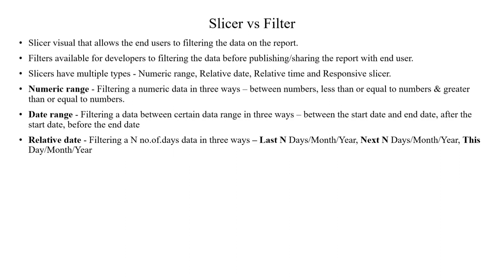When it comes to Relative Date, we have three types: Last N Days, Last 7 Days, Last 10 Years, Last Month, and also Next Year, Next Month, Next Day. The next end days options are available for forecasting. And 'This' means current — current year, current month, or current day, meaning today. For this purpose, we can use this Relative Date slicer.